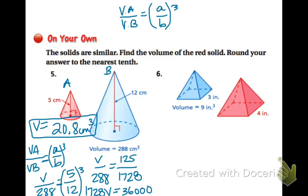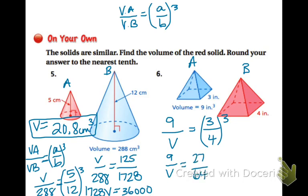We could do the same for number 6. We have A and B and in this case we know the volume of A to be 9 but we don't know the volume of B. The side length they give us in A is 3 and B is 4 and those quantities are cubed. So 9 over V is equal to 27 over 64, so 27V and when you multiply 9 times 64 you'll get 576, divide both sides by 27 and you will get this round down to 21.3 inches cubed for the volume of B.